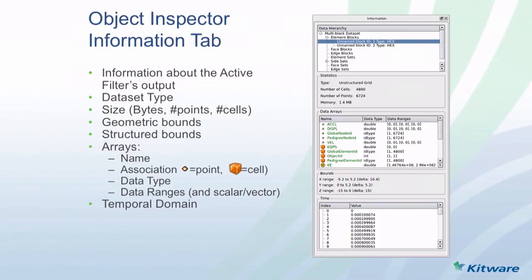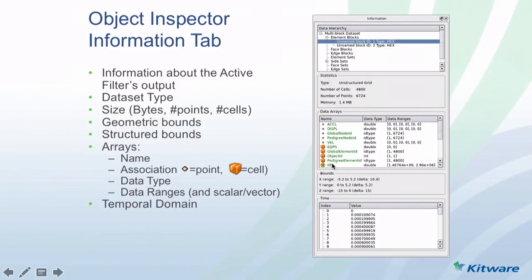The object inspector's second tab shows information about the data produced by the active filter. The kind of information shown includes what kind of dataset you have — in our case, a multi-block dataset. The selected block is an unstructured grid. It shows you all the attributes: point attributes, cell attributes, and field attributes not associated with points or cells. It shows you the bounds of the dataset, and the time step indexes with their actual time values.